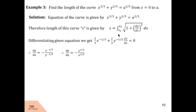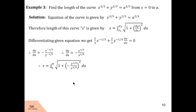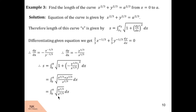Now substituting dy/dx, x1, and x2 into the formula for s: s = integral from 0 to a of under root(1 + (−y^(1/3)/x^(1/3))²) dx. Since minus squared is plus, this becomes under root(1 + y^(2/3)/x^(2/3)). After cross-multiplying and simplifying, this equals the integral of under root((x^(2/3) + y^(2/3)) / x^(2/3)) dx. But the numerator x^(2/3) + y^(2/3) equals a^(2/3), so we replace it by a^(2/3). The square root and squares cancel, leaving a^(1/3) in the numerator and x^(1/3) in the denominator.